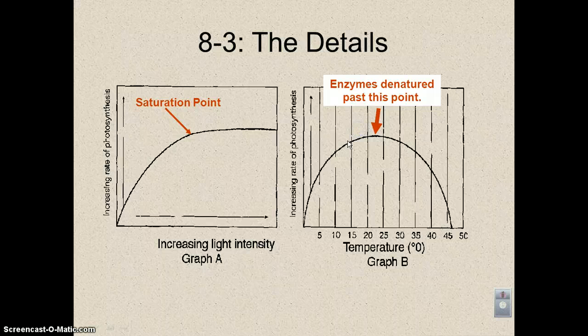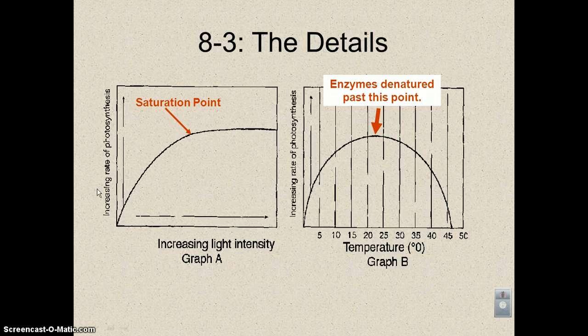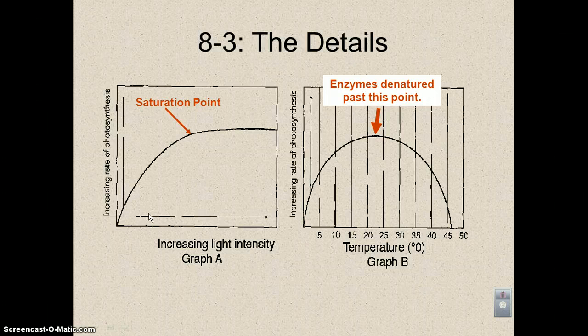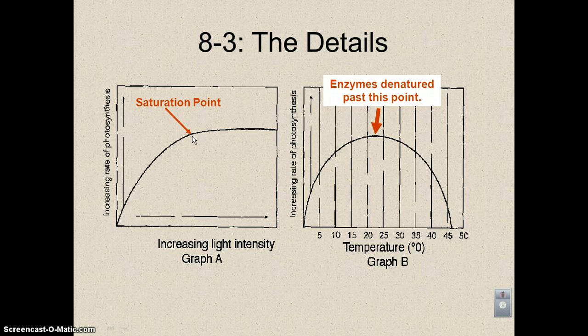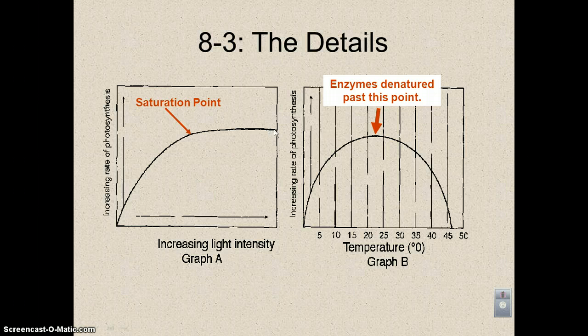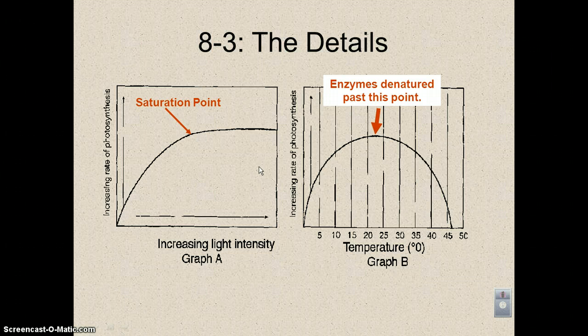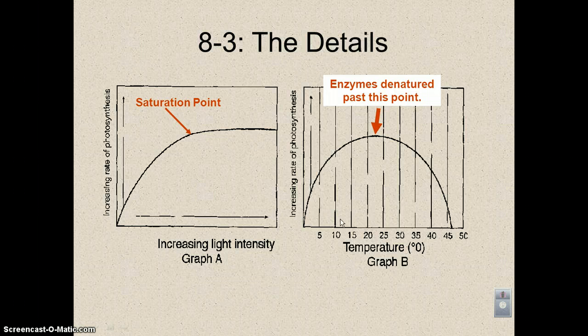All right, our final slide deals with two graphs, and this one deals with increasing light intensity. So over here on this axis, you have increasing rate of photosynthesis, and over here you have increasing light intensity. So notice as I add more and more light, the rate of photosynthesis increases until it reaches the saturation point where it doesn't matter how much more light you add, it stays the same rate. Because these chloroplasts can only do photolysis and produce ATP and NADPH only so fast that it doesn't matter how much extra light you get.